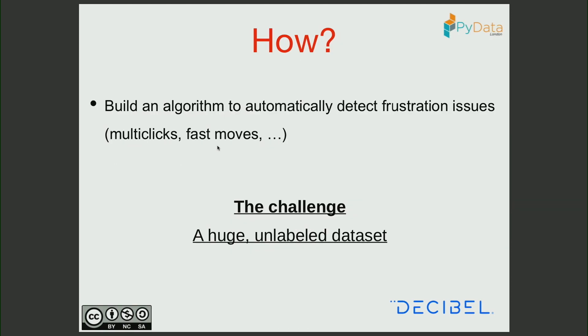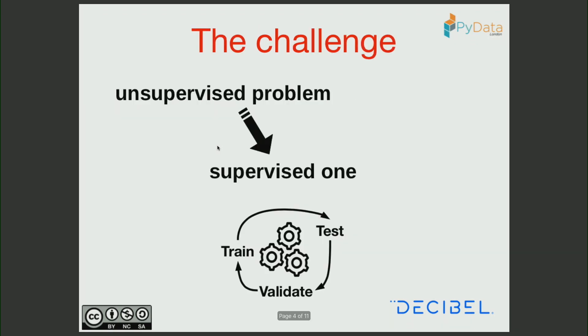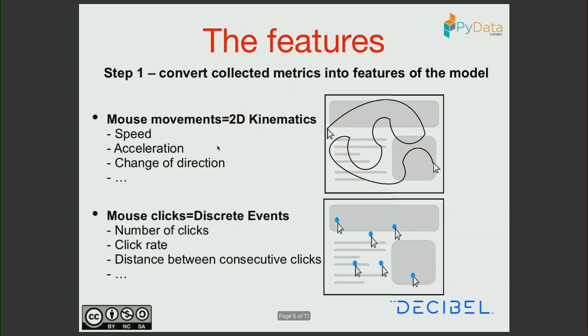Of course the answer is to automate, but the problem is that we have a huge dataset. The solution was to essentially reduce an unsupervised problem into a supervised one — training the model and validating it. So essentially we transformed the metrics into features of the model.